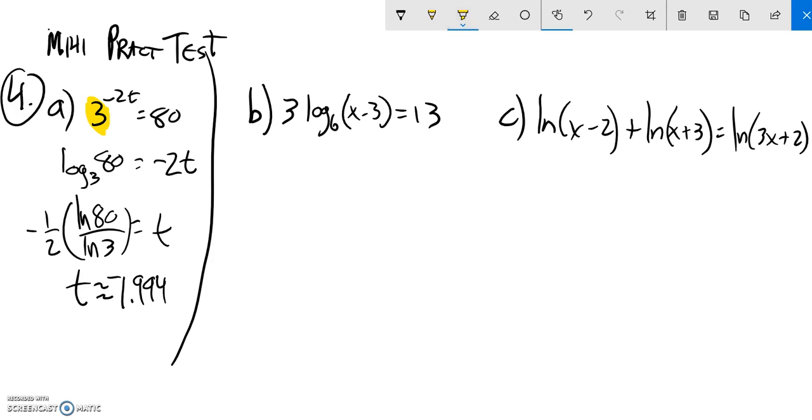All right, I'm going to evaluate this one. I noticed I have this log statement base 6, but I also have this times 3. I'm going to deal with that first. So divide both sides by 3 to get rid of that. So now I have log base 6 of x minus 3 is equal to 13 thirds.